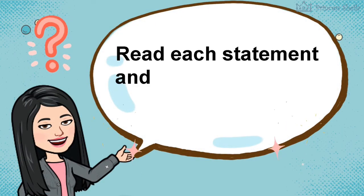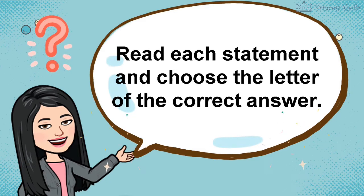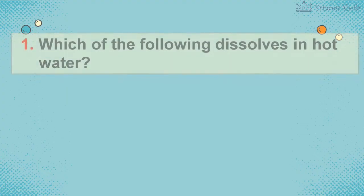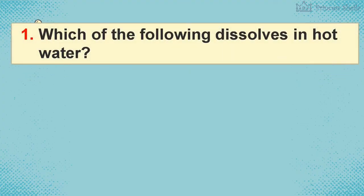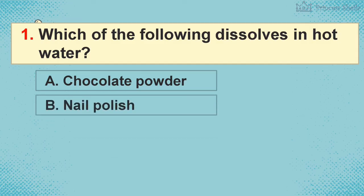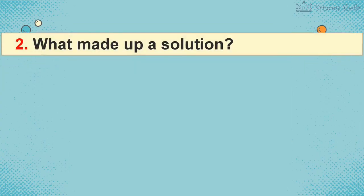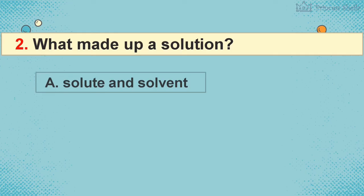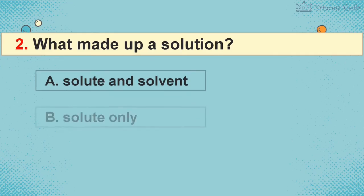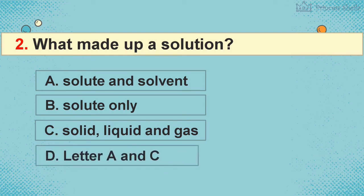Now let's have a short quiz. Question 1: Which of the following dissolves in hot water? A) Chocolate powder, B) Nail polish, C) Oil, D) Rock. Question 2: What makes up a solution? A) Solute and solvent, B) Solute only, C) Solid, liquid, and gas, D) Letters A and C.